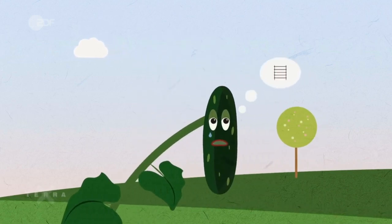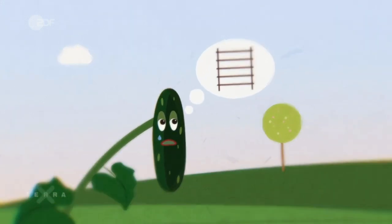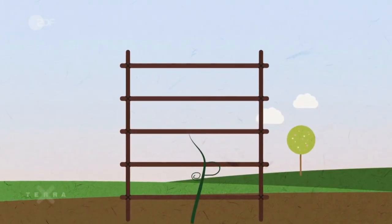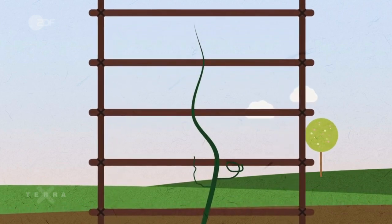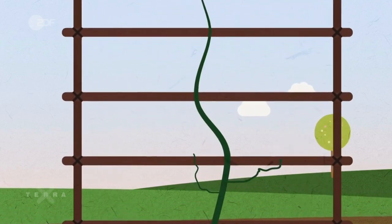The tendrils are initially rolled up and then stretch out in length. They use search movements to find places to stop. When it comes into contact with a possible support, the tendril grasps it.